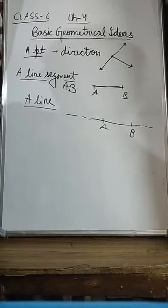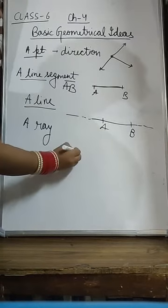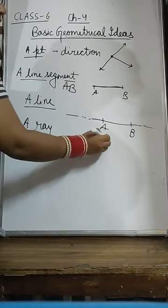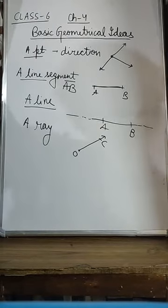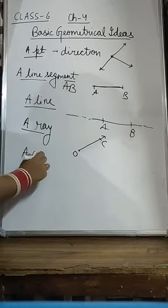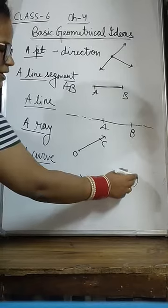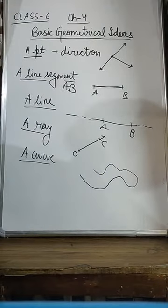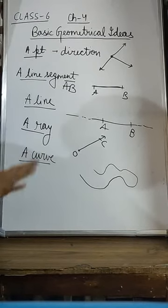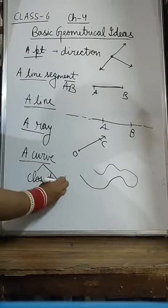Now we are coming to what is a ray. Basically a ray has a fixed point — this is the fixed point — and it can go in any direction. So OC is a ray. Now what is a curve? A curve can be drawn using free hands. A simple curve will not trace itself, meaning it will not come back over itself. There are two types of curves: closed curve and open curve, which we will cover in the next exercise.